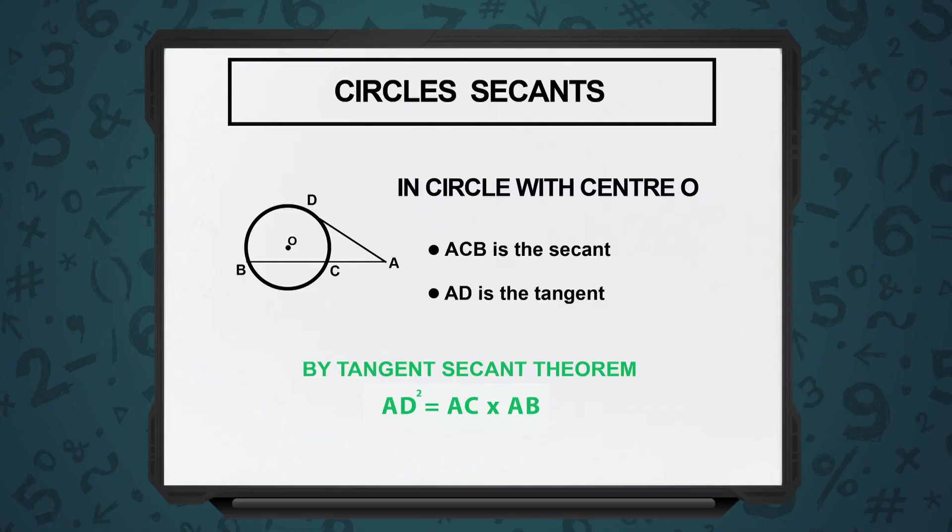The last concept that binds all of this together is the tangent-secant theorem. We have this circle with center O and the same external point. First, I draw tangent AD, where A is the external point and D is the point where the tangent just touches the circle.